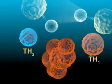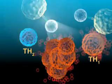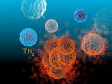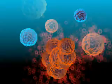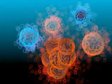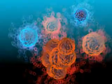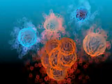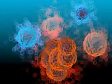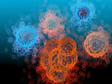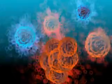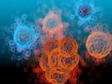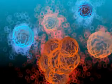Th1 cells produce cytokines that in general tend to be pro-inflammatory, while Th2 cells produce cytokines that tend to be anti-inflammatory. The release of cytokines by the Th1 and Th2 cells affects how inflammatory multiple sclerosis lesions are formed and whether protective immunity occurs.